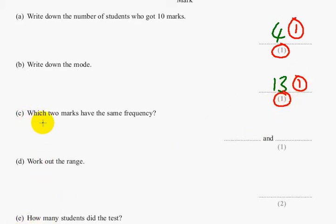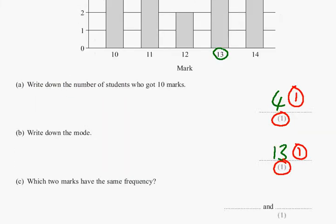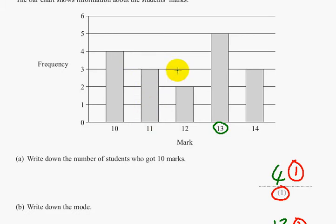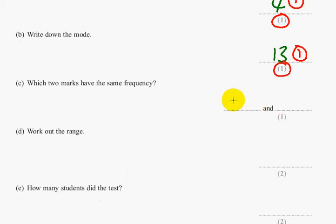Part C. Which 2 marks have the same frequency? 11 and 14. Both had 3 people who got these marks, so 11 and 14 have the same frequency. And that's worth 1 mark.